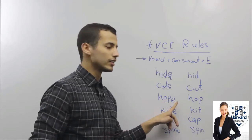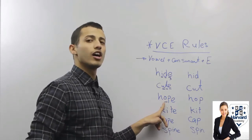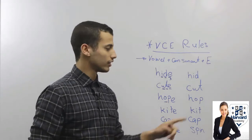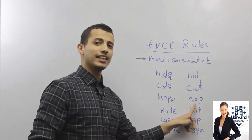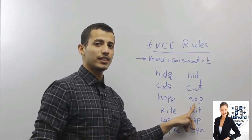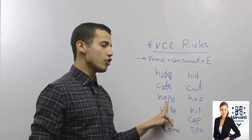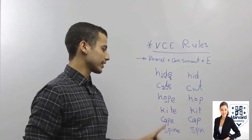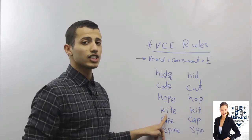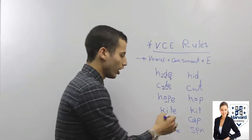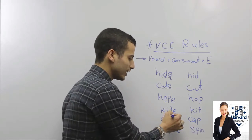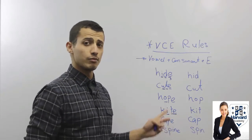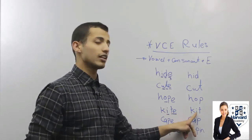This one here — this is O, vowel plus consonant plus E. So this O is 'oh,' so I'm going to say 'hope.' Without the E here it's going to be 'hop.' Hope, hop.